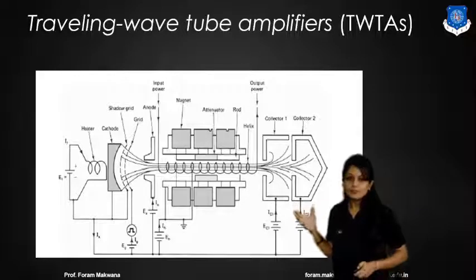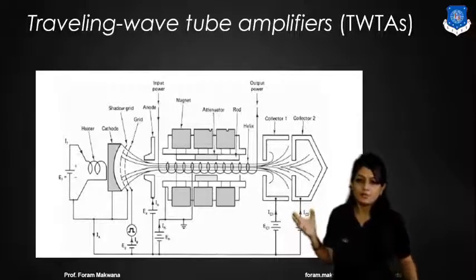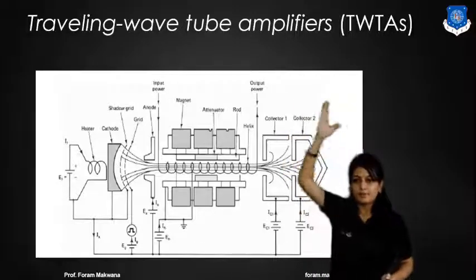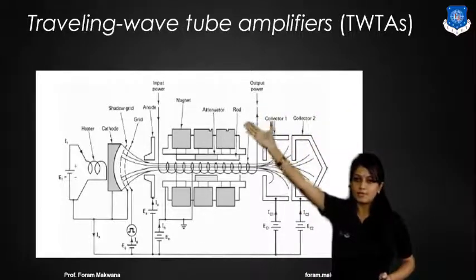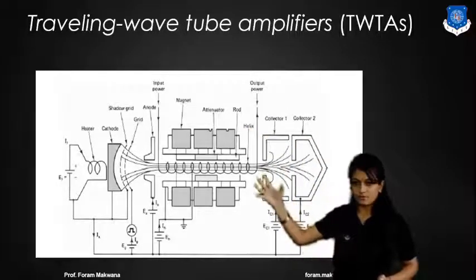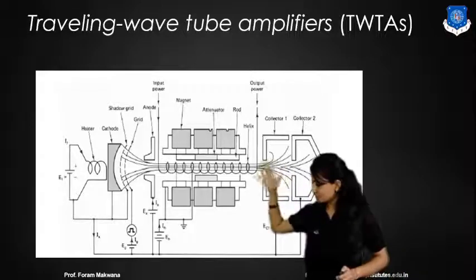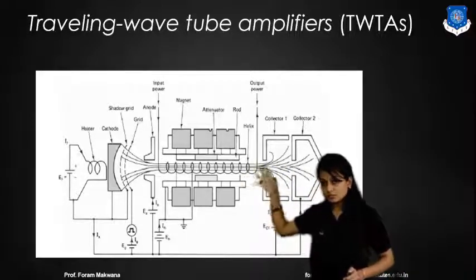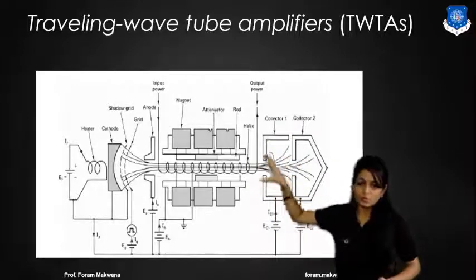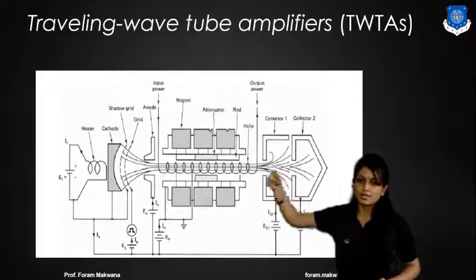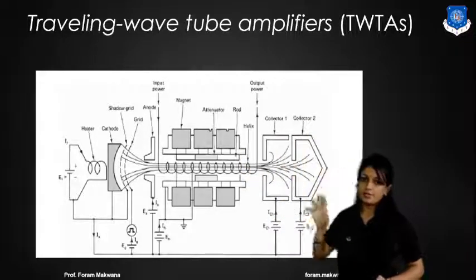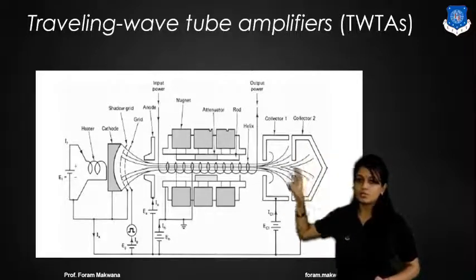Amplification of power at high frequency is done with the help of a Travelling Wave Tube amplifier. The Travelling Wave Tube amplifier has a structure consisting of an electron gun, and a helix structure or closed structure in which the helix form is present. The output is collected at the collector.